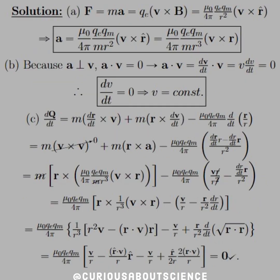For part A, F equals MA, but we also know that equals Qe times V-cross-B from the Lorentz force. Plugging all that in, we can show that A is equal to mu-naught over 4pi, Qe Qm divided by M R-squared, times V-cross-R-hat. Or if you would like, we can write R-hat as the R-vector and just put another factor of 1 over R in there, which is what it equals.